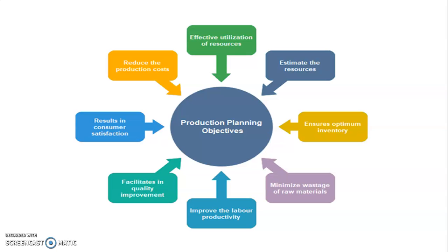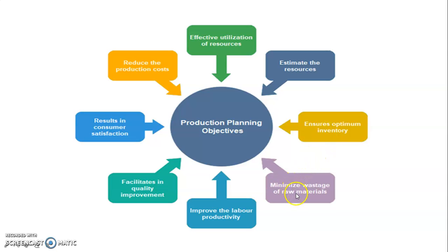The PPC process usually kicks off with the demand forecasting of a product. Designing the production plan according to demand is very important. This chart gives us a few objectives of production planning: effective utilization of resources, estimating resources, ensuring optimum inventory, minimizing the wastage of raw materials, improving labor productivity, facilitating quality improvement, resulting in customer satisfaction, and reducing the overall production cost.